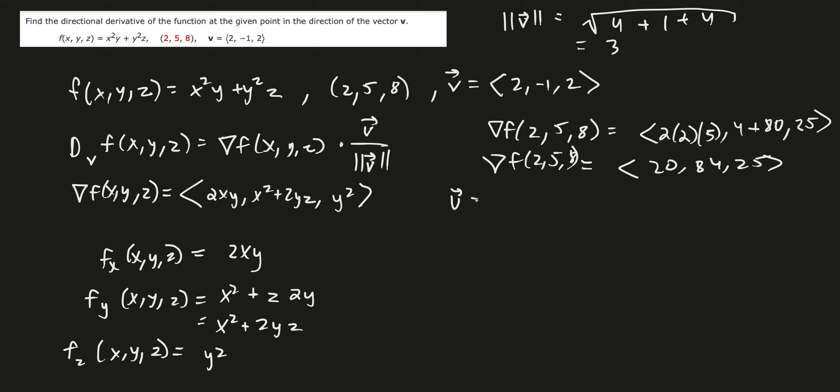We'll call that u, which is going to be the vector v over the magnitude of the vector v. Vector v is 2, negative 1, 2. The magnitude is 3. So this ends up being 2 thirds, negative 1 thirds, comma 2 thirds.